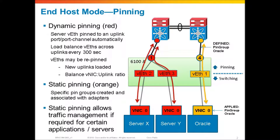Now, what also happens with dynamic pinning is that the fabric interconnect will look every 300 seconds to load balance traffic across all of the uplinks for dynamic pinning. So what would happen if I had a running system and I added two more uplinks, uplink two and uplink three? Now there's an imbalance. I've got uplinks two and three with no traffic at all, and uplink number one with all the traffic. So every 300 seconds, the fabric interconnect is going to look at this, find there's an imbalance in the ratio of VNICs to uplinks.